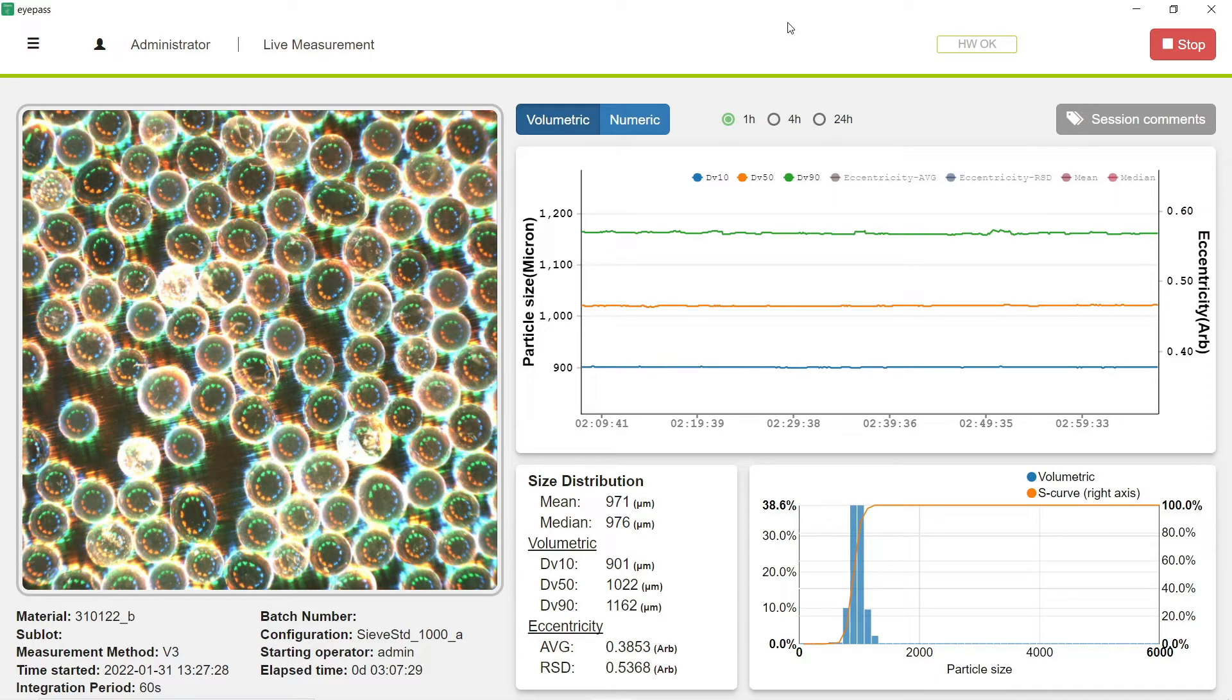If we look at the D50, we have 1022 microns, a very highly accurate result for this type of material with its particle size distribution. And again, we have all the interactions we can have with this software, such as hovering over the charts to see the real-time data as it's happening.